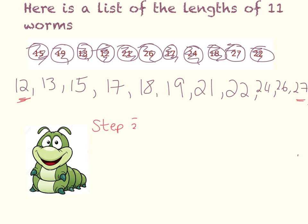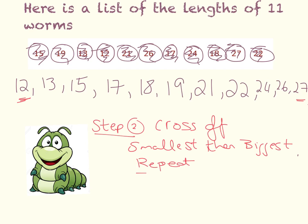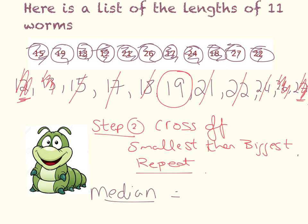Step two is to begin to cross off. We cross off the smallest number first, followed by the biggest number, and we repeat. The smallest number in this instance is 12, so 12 is gone. 27 is gone. Then back to the smallest number, this time it's 13. The biggest number here is 26, and we keep crossing off as so. This is all showing your work for the examiner. We're left with one number in the middle: 19. And we can conclude that the median, the number in the middle of these worms when put in order from smallest to biggest, is 19.